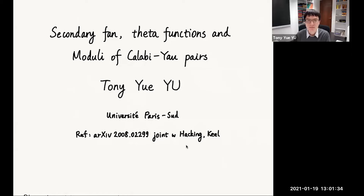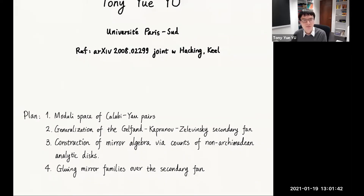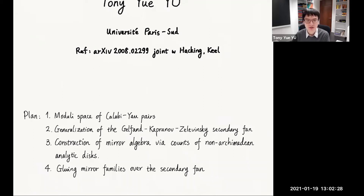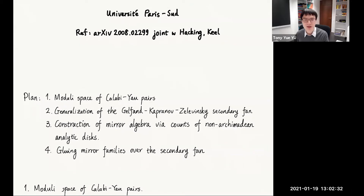This is based on my joint work with Paul Hacking and Sean Keel. Here is the plan of my talk: first I will introduce the moduli space of Calabi pairs, then I will explain a generalization of the Gelfand-Kapranov-Zelevinski secondary fan. After that, I'll explain the construction of the mirror algebra by counts of non-Archimedean analytic discs. When we take a spec of this mirror algebra, we will get an affine mirror family, and finally we will glue the mirror families together over the secondary fan. Let's start with an introduction to the moduli space of Calabi pairs.